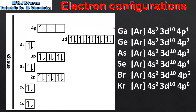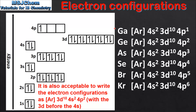Finally we are going to complete the electron configurations of the elements gallium to krypton. Starting with gallium which is Ar4s2 3d10 4p1, so we put 1 electron in the 4p sub level. Next is germanium which is Ar4s2 3d10 4p2 — once again with degenerate orbitals we put 1 electron in each orbital first. Next we have arsenic which is Ar4s2 3d10 4p3, moving on to selenium which is Ar4s2 3d10 4p4.